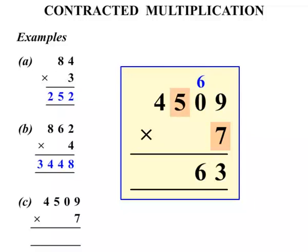7 times 5 is 35. So we put the 5 down and carry the 3. 7 times 4 is 28. Plus 3 more is 31. And there's no further calculation so let's write the 31 there. So the answer there 31,563.